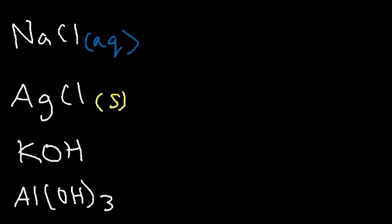What about potassium hydroxide? The first thing I would look at is potassium, which is a group 1 metal in the first column of the periodic table — those are always soluble, so this is going to be aq. For aluminum hydroxide, hydroxides are generally insoluble except with group 1 metals and some group 2 metals. Aluminum is in group 3A, or group 13, of the periodic table — not group 1 and not group 2 — so it's going to be insoluble with hydroxide.